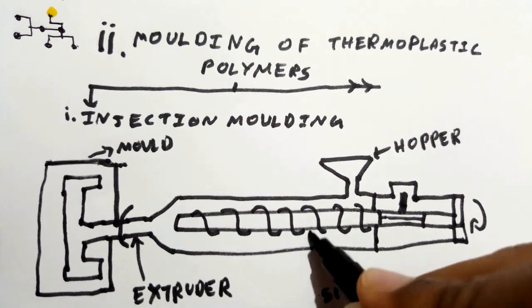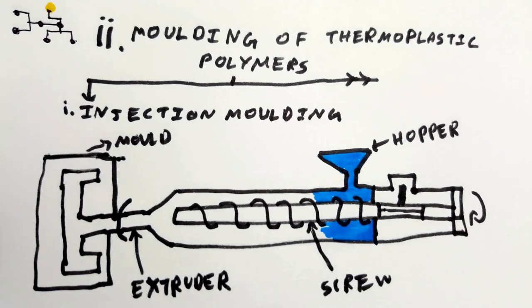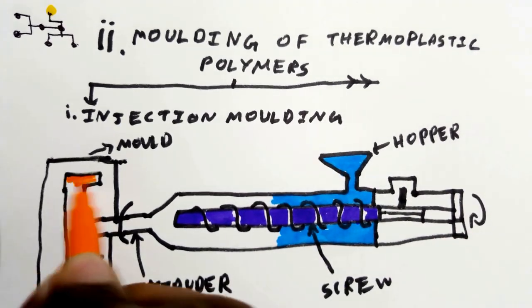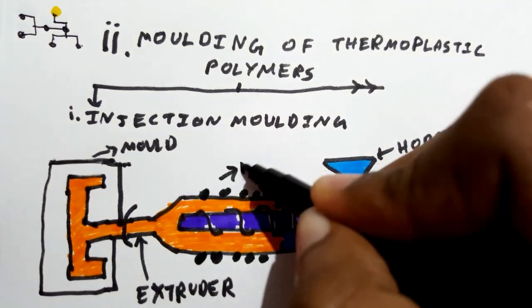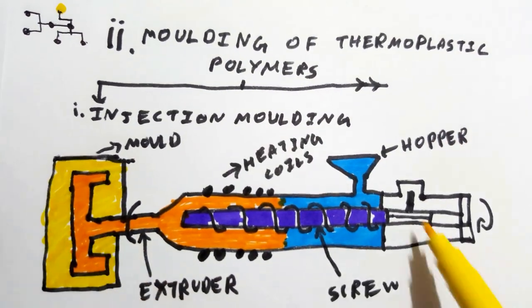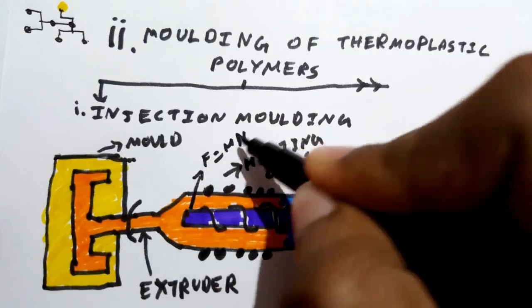One being injection moulding. Here, the material is fed from a hopper to the rotating screw, which discharges the material in front of the extruder. Heat is developed from the electric band heaters and friction from the rotating screw.